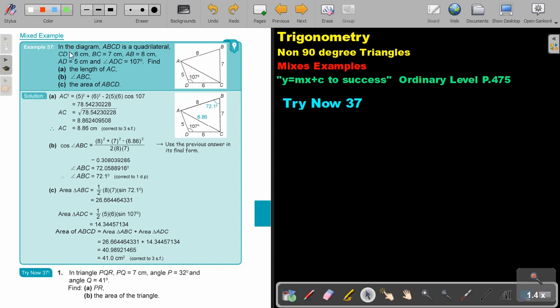Let's look at an example. In the diagram, ABCD is a quadrilateral. CD is 6, BC is 7, AB is 8, AD is 5, and angle ADC is 107. Find the length of AC. Now, you just work in one triangle at a time.